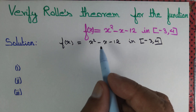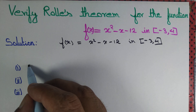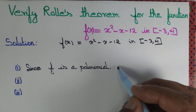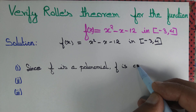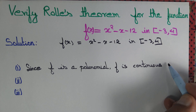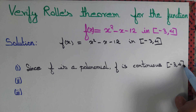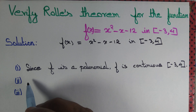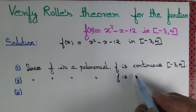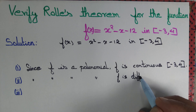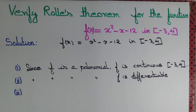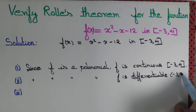The first condition: f is continuous. Since f is a polynomial, f is continuous. In fact, f is continuous throughout ℝ, but we only need it on the closed interval [-3, 4], which is a subset of ℝ. Since f is a polynomial, f is also differentiable — you can differentiate any polynomial. We only need differentiability on the open interval (-3, 4).